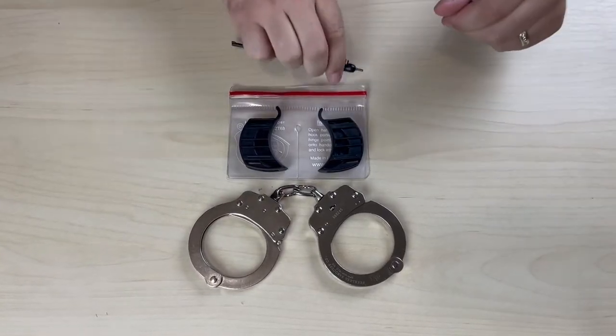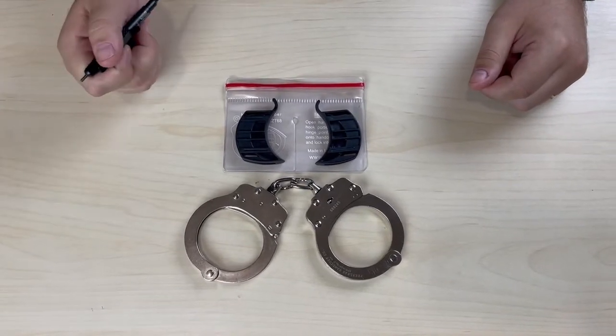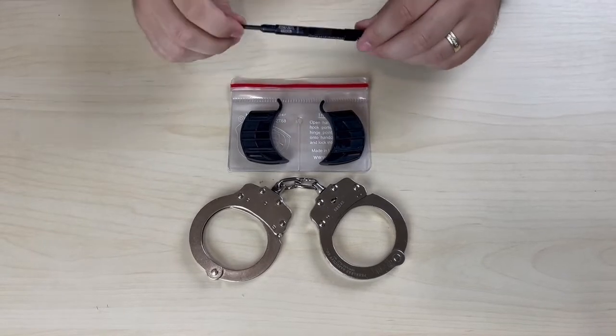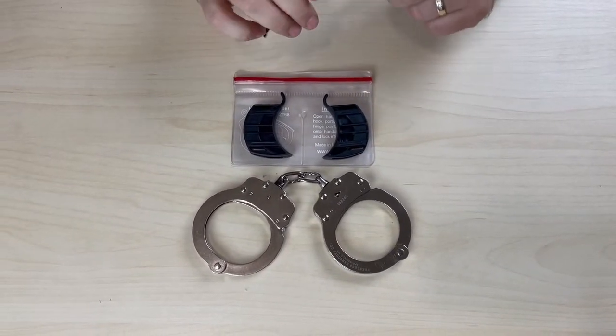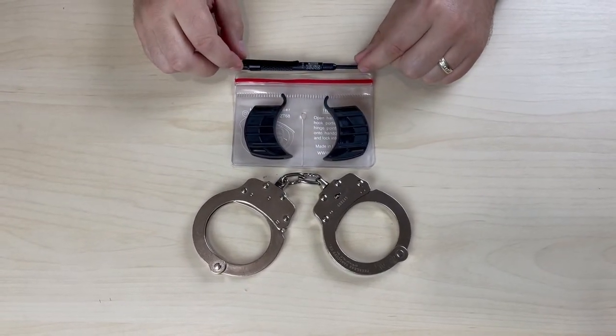Hey guys, what we have for you today is the Zack Tools ZT-68, which is the handcuff helper. This tool was designed to help restrain people with smaller wrists that don't fit into a standard handcuff, so we're going to give you a quick demonstration on how this tool could help you.